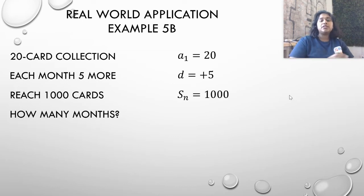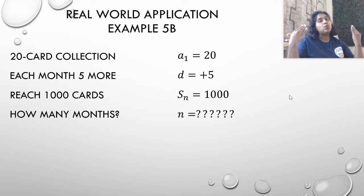If we want to reach 1,000 cards, we're dealing with a sum value, a sum of such n that we reach 1,000. We don't know the n value. In fact, how many months is going to be our n value? What the heck is our n? So we're going to solve for that n.